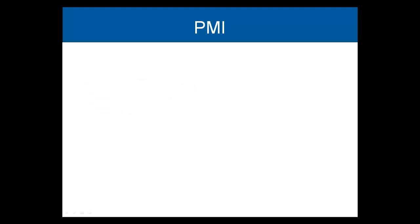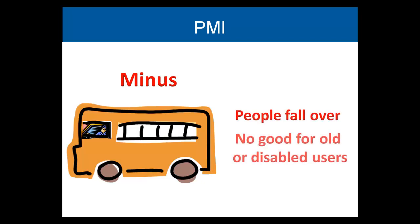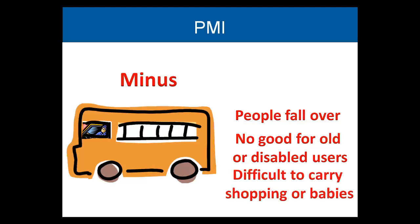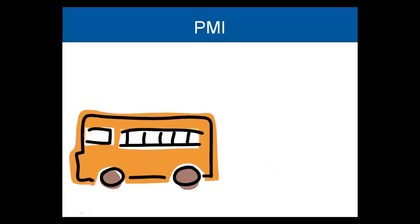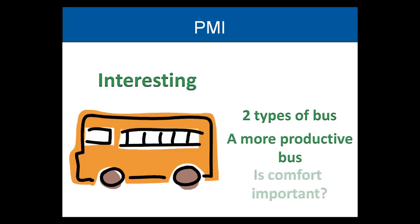Then we lay out the minus points: passengers would fall over if the bus stopped suddenly, old people and disabled people would not be able to use buses, and it would be difficult to carry shopping bags or babies. Then the interesting points: it could lead to two types of buses, one with and one without seats; the same bus would do more work; or comfort may not be so important in a bus.